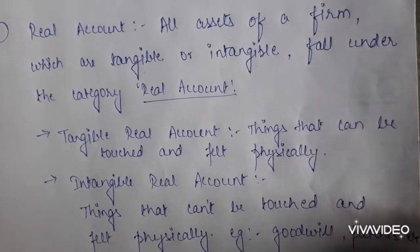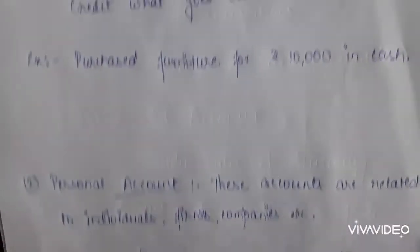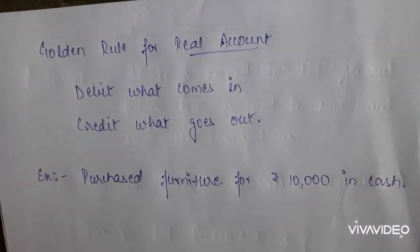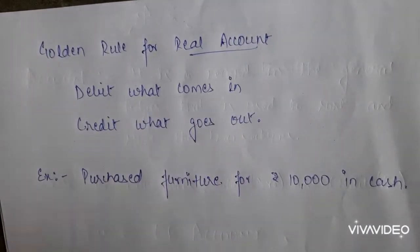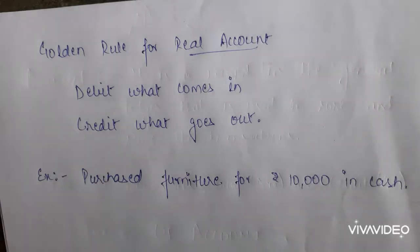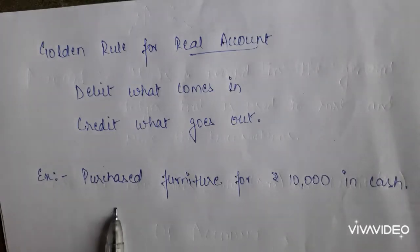Now we will see the golden rule for the real account. The golden rule for real account is: debit what comes in and credit what goes out. This means that for assets, we have to see what thing is coming inside the firm and what thing is going outside the firm. Whatever is coming in, that asset we have to debit, and whatever is going out, that asset we have to credit.